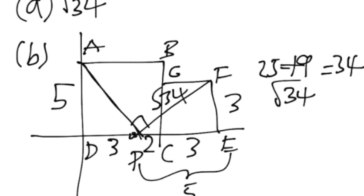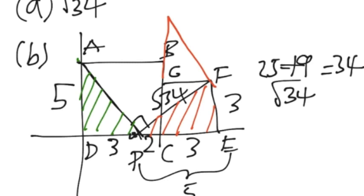Okay, so part C says, segments PA and PF divide the squares into pieces. Arrange the pieces to form the third square. So basically if we move this part and put it up here, and then move this part and put it up here, then we get the square with side length root 34.